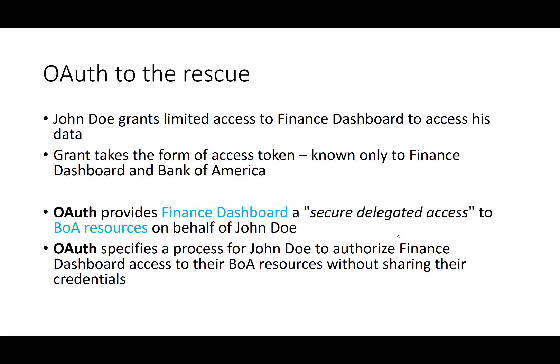To mitigate all these problems, OAuth is the perfect solution. The problem can be alleviated if FinanceDashboard has only limited access to Bank of America — specifically, it can only retrieve statement balances. And John Doe doesn't have to share credentials with FinanceDashboard. This can be accomplished using OAuth.